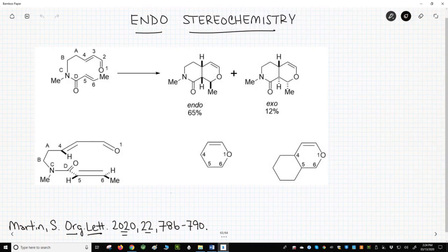Let's now focus on stereochemistry. The atoms in the starter material in the upper left are numbered one through six, as we normally do in a Diels-Alder. The tether atoms are A through D.